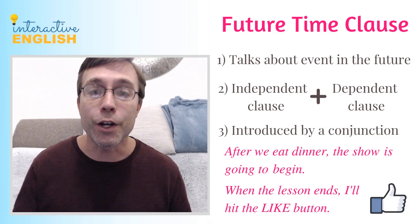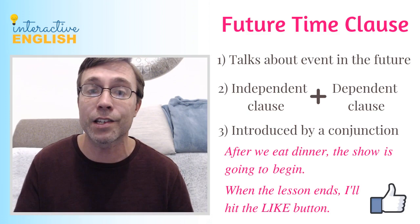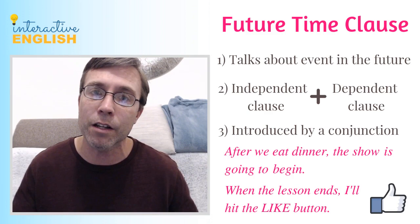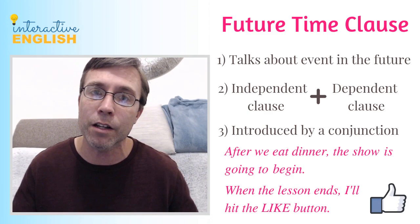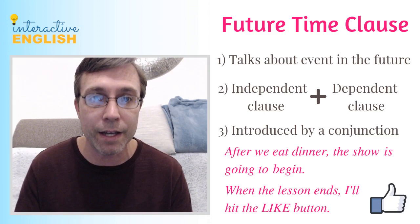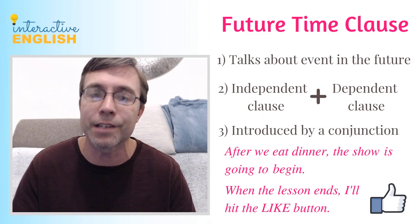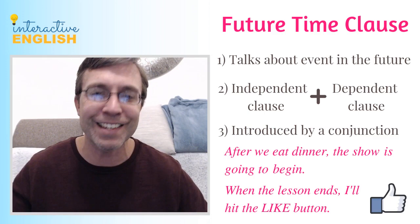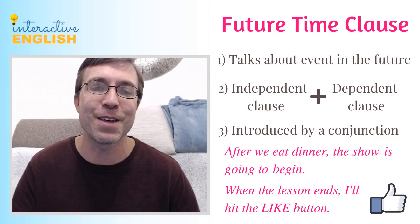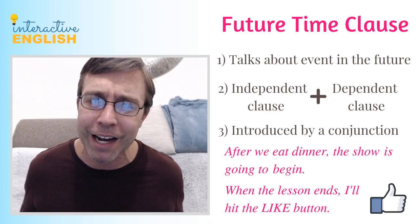Look at the example sentences: 'After we eat dinner' — dependent clause, present simple — 'the show is going to begin' — that is our independent clause. 'Is going to begin' is the main verb, telling us the future. We use 'be going to' or 'will' when referring to the future. What gets confusing is students want to say 'after we will eat dinner,' but the rule is: dependent clause uses present simple, independent clause shows the future. Another example: 'When the lesson ends, I'll hit the like button.'